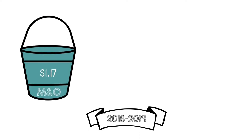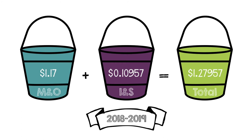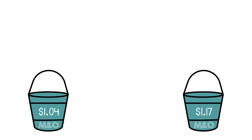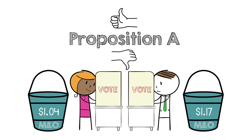For the 2018-19 school year, the school board adopted an M&O tax rate of $1.17 and a slightly lower I&S tax rate of $0.1095, for a total tax rate of $1.2795. Because the adopted maintenance and operations rate is above $1.04, an election must be held and voters must decide whether the $1.17 M&O rate stands or whether that M&O tax rate will be rolled back to $1.04.